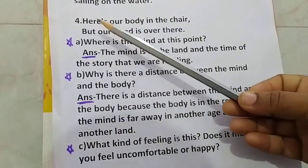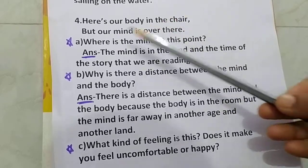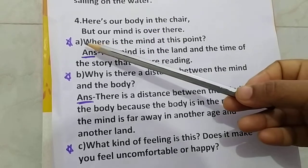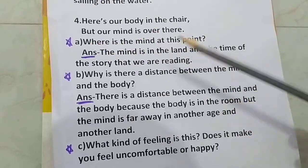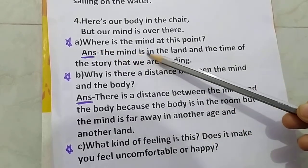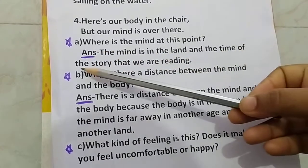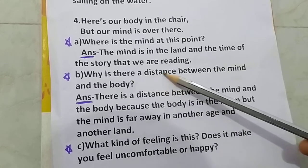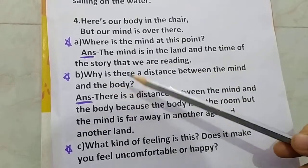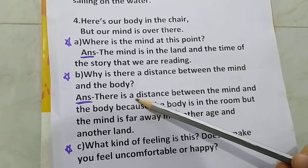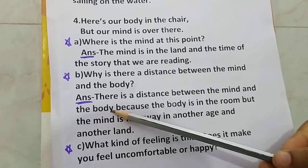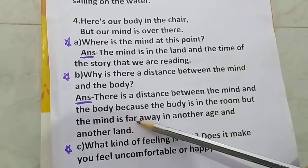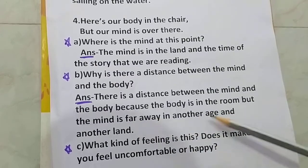Fourth question. The lines are: 'Here is our body in the chair, but our mind is over there.' Question A: where is the mind at this point? The mind is in the land and the time of the story that we are reading. Question B: why is there a distance between the mind and the body? There is a distance because the body is in the room, but the mind is far away in another age and another land.